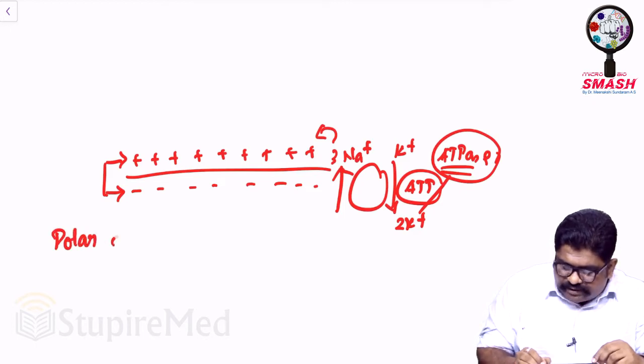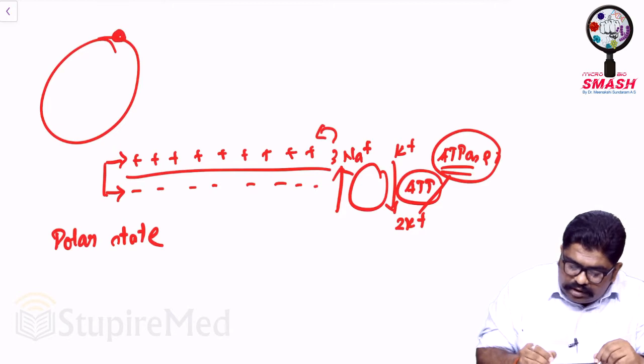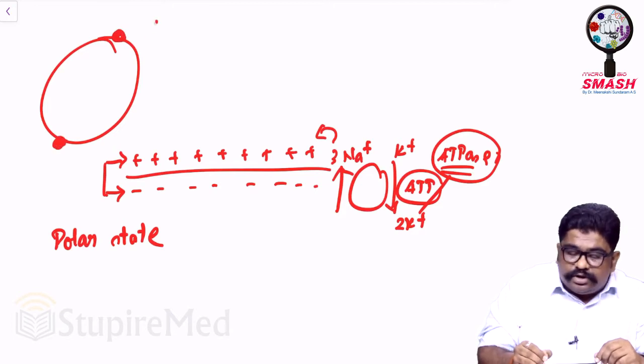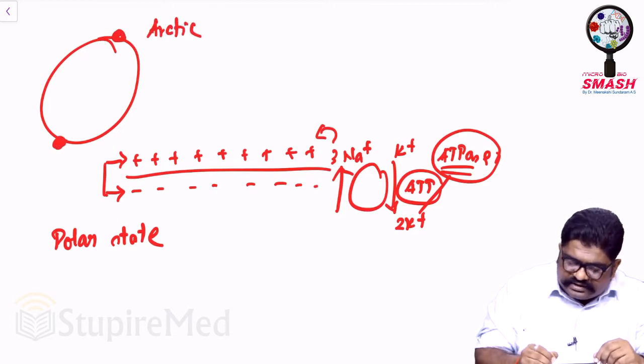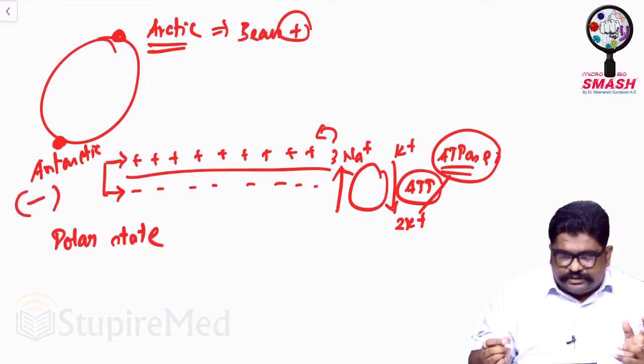This is referred to as polar state. Why do I call them polar state? In the globe, this is north pole, this is south pole. The north pole is called the arctic pole, this is the antarctic pole. Arctic speaks about the presence of polar bears. You have polar bears on this pole, polar bears are absent in this pole.